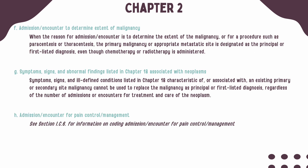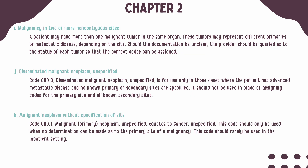When the reason for the encounter is to determine the extent of the malignancy, the primary malignancy or the appropriate metastatic site should be assigned as the first listed diagnosis, even if chemo or radiation therapy is administered. If signs or symptoms are reported with an existing primary or secondary diagnosis, they should never be reported as a first listed diagnosis, regardless of the number of admissions or encounters for treatment and care of the neoplasm. If your encounter is for pain control or pain management associated with a neoplasm, see the guidelines for Chapter 6 on how to report it. Sometimes a patient can have more than one malignancy within the same organ; depending on the site, they can represent different primary or metastatic tumors. If documentation is unclear as to the status of each tumor, you should query your provider for clarification so that the correct codes can be assigned.